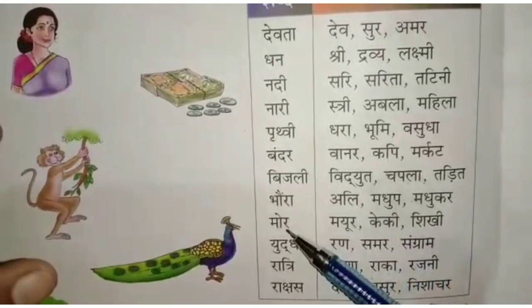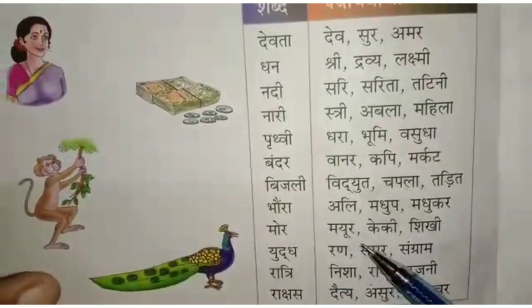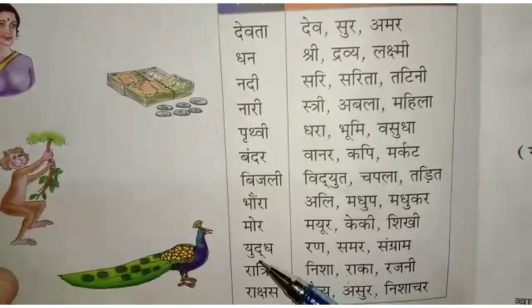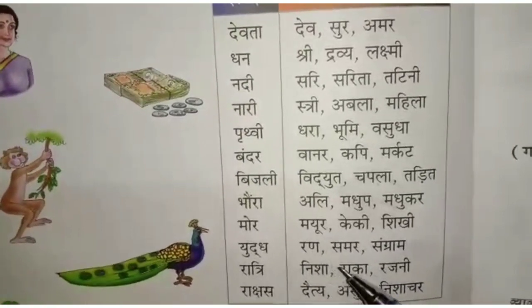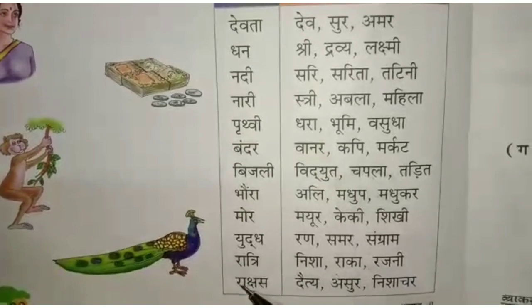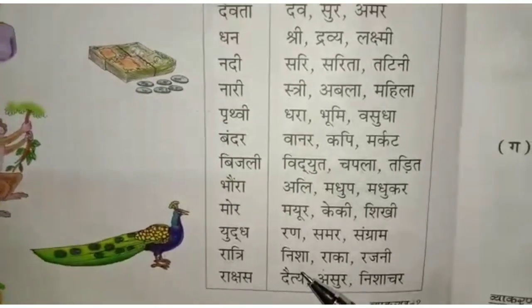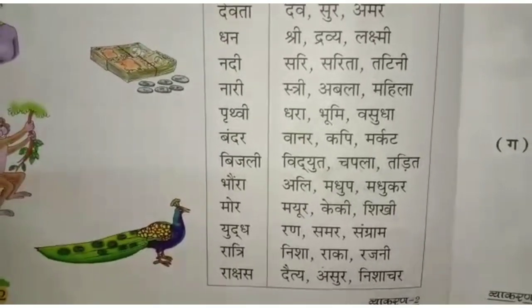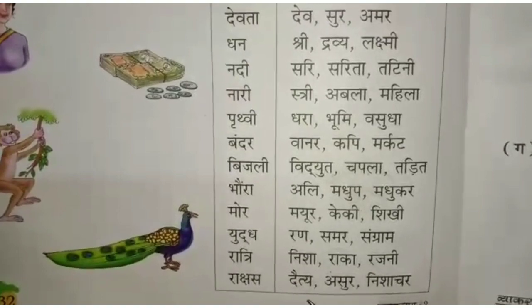भौरा — अली, मधुप, मधुकर। मोर — मयूर, केकी, शिखी। युद्ध — रण, समर, संग्राम। रात्रि — निशा, राका, रजन। राक्षस — दैत्य।